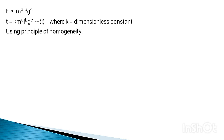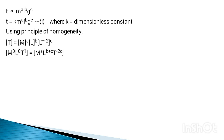Using the principle of homogeneity, the dimension of each term on the LHS must equal the dimension of the term on the RHS. The dimension of T is T, m is M, l is L, and g (acceleration) is LT⁻², while k is dimensionless. So we can write: M⁰L⁰T¹ = Mᵃ · L^(b+c) · T^(−2c).